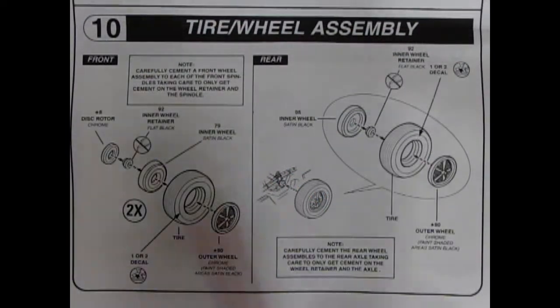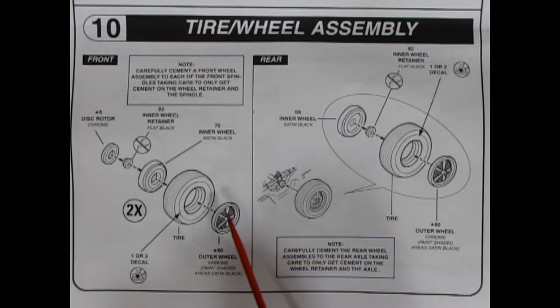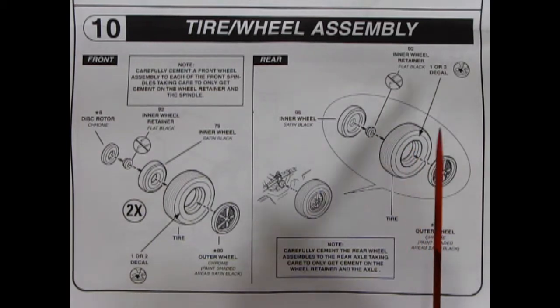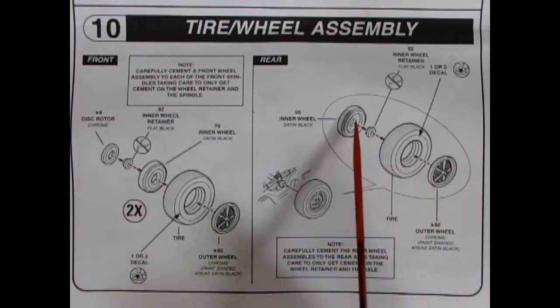Our tire wheel assembly is the Chrysler version of the Magnum 500s. They pop into our tires and then that goes onto an inner wheel. There is a wheel retainer and a disc rotor for the front and in the back it's a little more simplified. Outer wheel, tire, retainer and the inner wheel. These would be drums on the back.